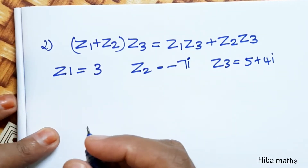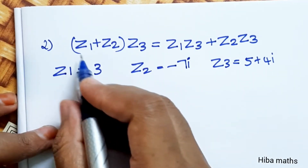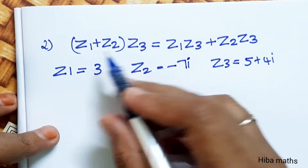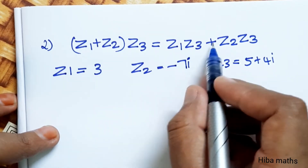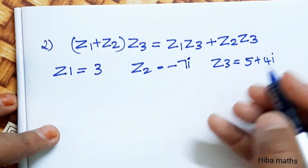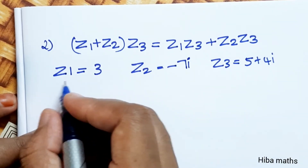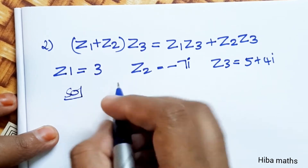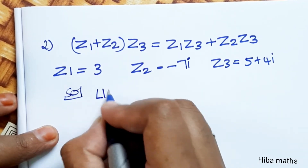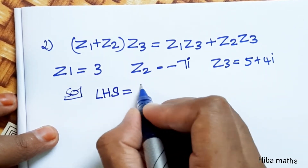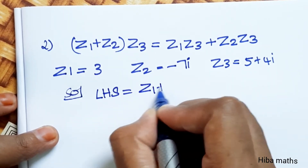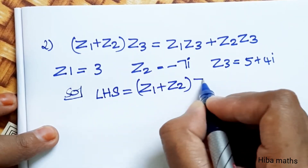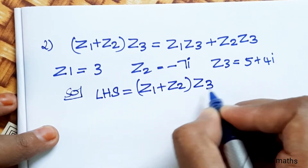Second subdivision: (z1 plus z2) into z3 is equal to z1 into z3 plus z2 into z3. Solution — LHS is equal to (z1 plus z2) into z3.